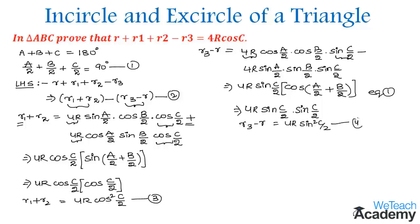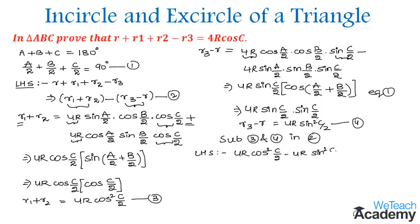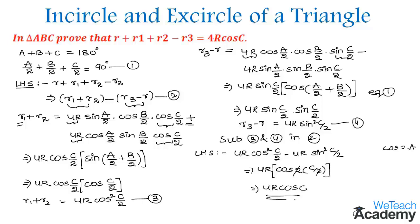Substituting equations 3 and 4 into equation 2, the LHS becomes 4r·cos²(C/2) − 4r·sin²(C/2). Taking 4r as a common factor and applying the identity cos²(A) − sin²(A) = cos(2A), we get 4r·cos(2 × C/2), and the 2s cancel, leaving 4r·cos(C).